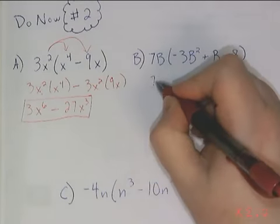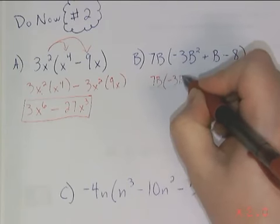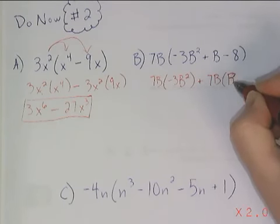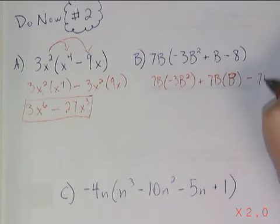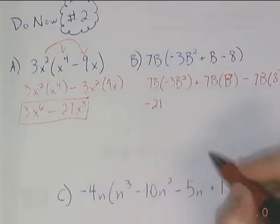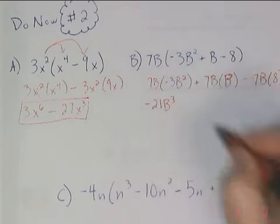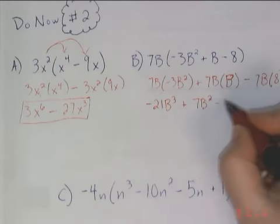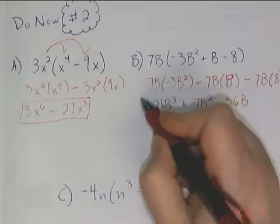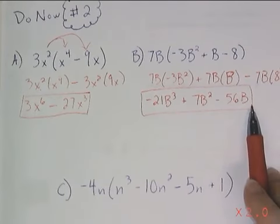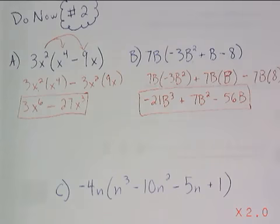For problem b, make sure that 7b gets multiplied by every term in the parentheses. I started to write the wrong thing — it's another reason why it's good to write this out. 7 times negative 3 gives me negative 21, b times b squared is b to the third. This becomes 7b squared, and this becomes 56b. If you do this math and you see two terms that are alike, you need to go back and double check your exponents. Since we did not start off with like terms in the parentheses to begin with, we should not have like terms in our answer in the end.